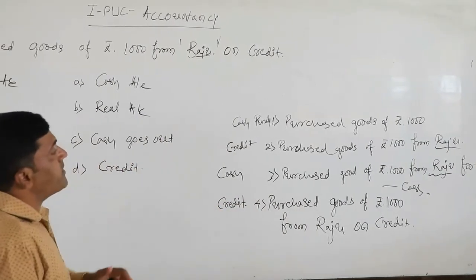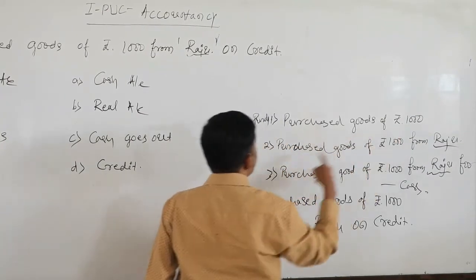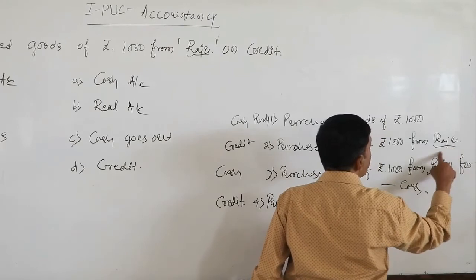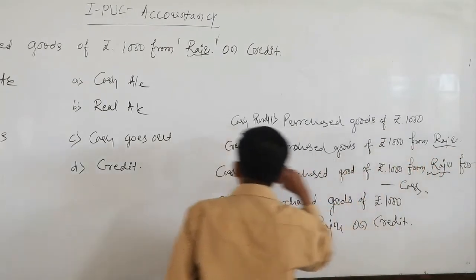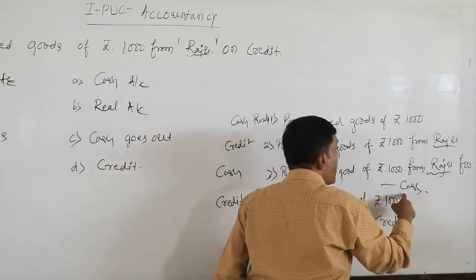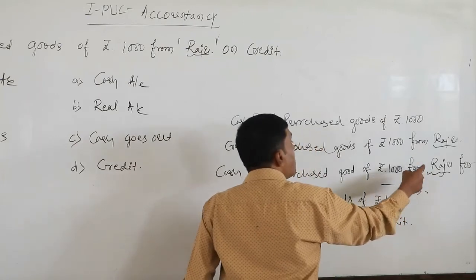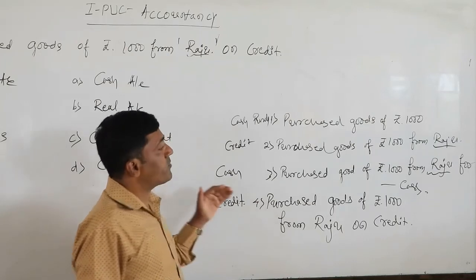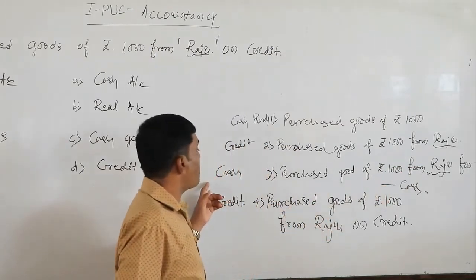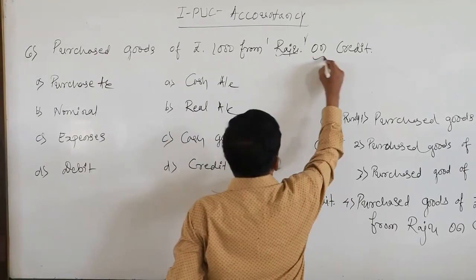In the event of purchase we can see four rough book entries. First: purchased goods of rupees 1,000. Second: purchased goods of rupees 1,000 from Raju. The difference between these two is that the seller's name is mentioned in the second — so it is a credit purchase. Third: purchased goods of rupees 1,000 from Raju for cash — even though the seller's name is mentioned, 'for cash' at the end makes it a cash purchase. Fourth: purchased goods of rupees 1,000 from Raju on credit — 'on credit' confirms it is a credit purchase.